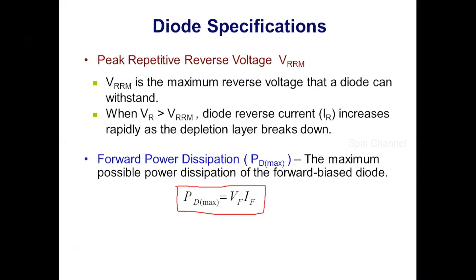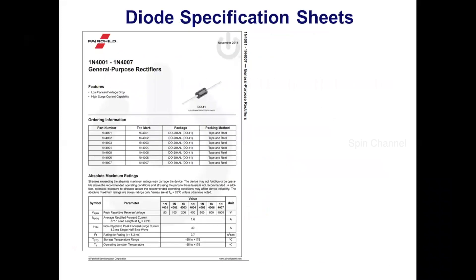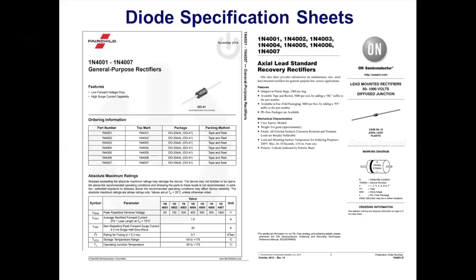How do you choose a suitable diode for a particular application, and from where can these specifications or ratings be obtained? The specifications of any device are provided by the device manufacturer in the form of datasheets. Let us have a look at a couple of datasheets and learn how to read them.